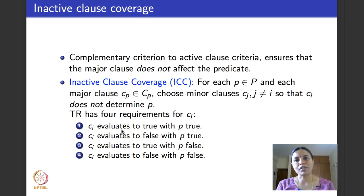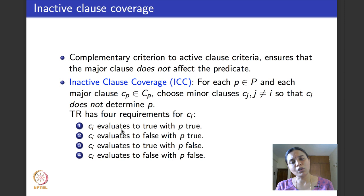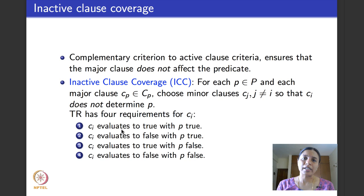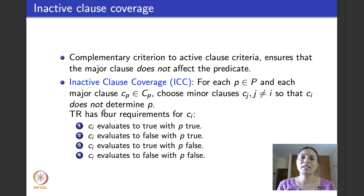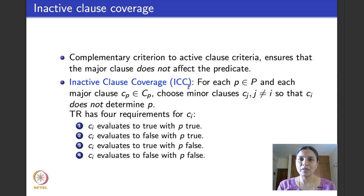In inactive clause coverage criteria, we again fix a clause — call it the major clause — but our interest is knowing how the major clause does not affect the predicate. Each clause in the predicate takes a turn to become the major clause. We choose the other clauses (minor clauses) to take values such that the major clause does not affect the predicate.